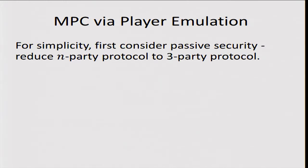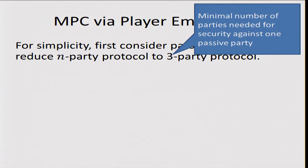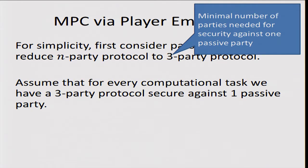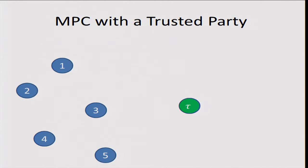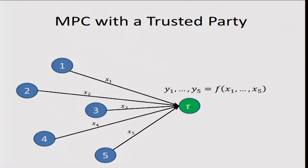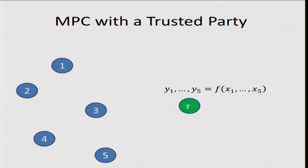For simplicity, let's focus on the passive setting. I'm going to show a reduction from an n-party MPC to a three-party MPC. The reason for three is that if you want a passively secure MPC protocol secure against one player, you need at least three players. So let's assume we have three-party MPC for any functionality and try to construct an n-party MPC. We start with an MPC protocol that has a trusted party Tau. The players send their inputs to Tau, Tau computes the function, and sends back the results.